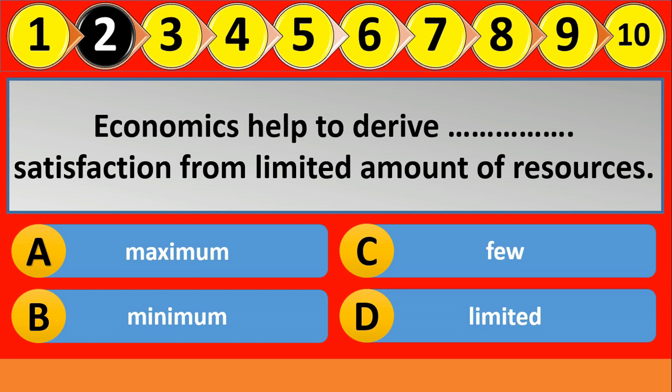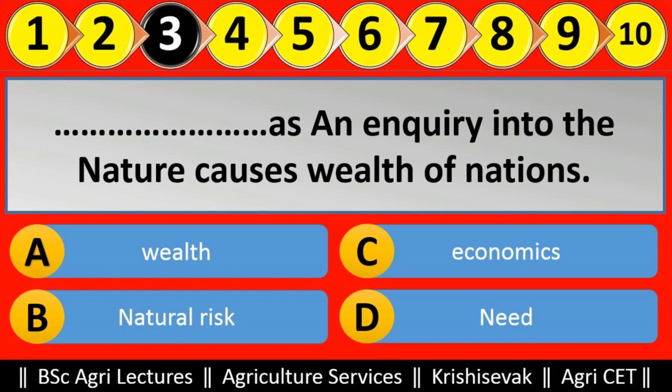Question number third: dash dash is an inquiry into the nature and causes of the wealth of nations. This definition was given by Adam Smith. The right answer for this question is option C — Economics.